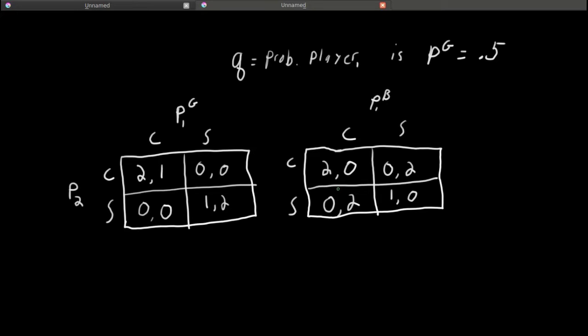First of all, note that player 2's action space is just C or S. He doesn't observe anything, he doesn't get a type. So, he can only choose to go to the concert or go to the sporting event.